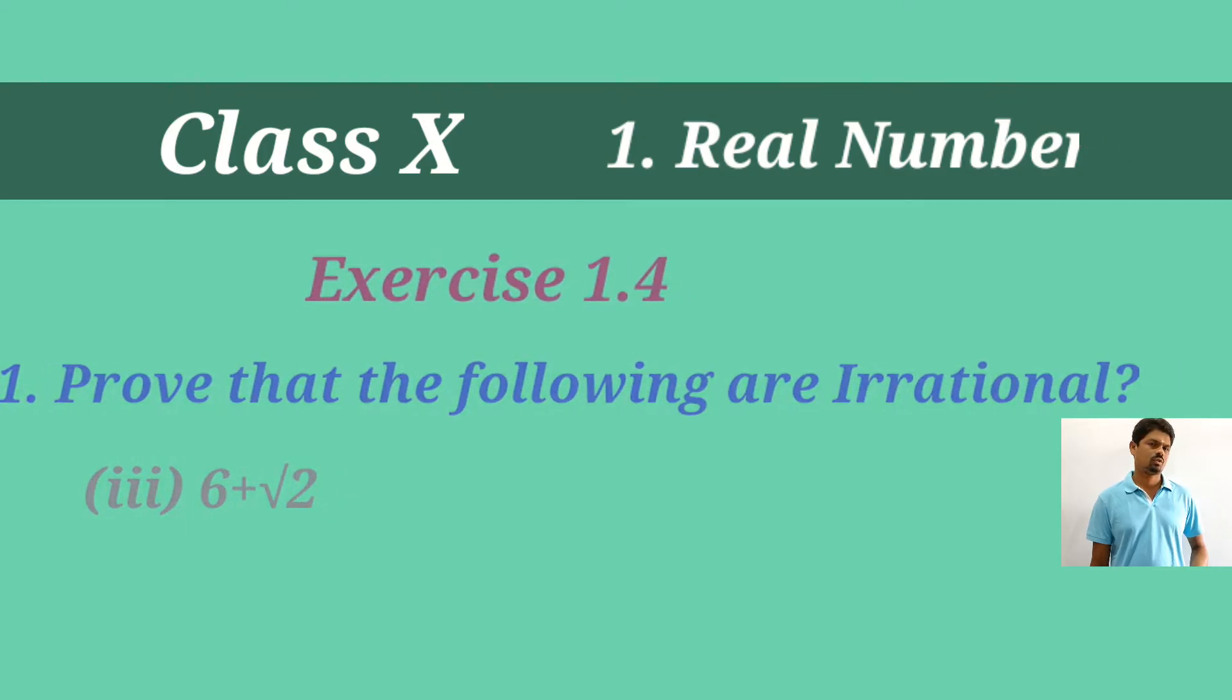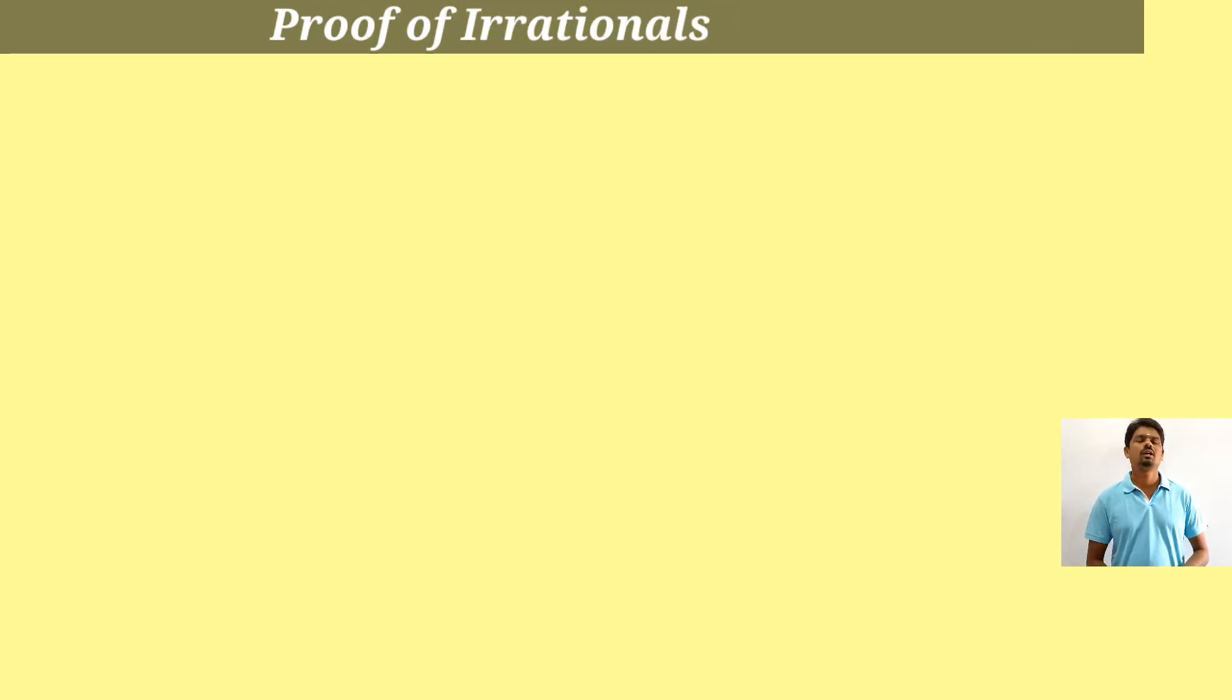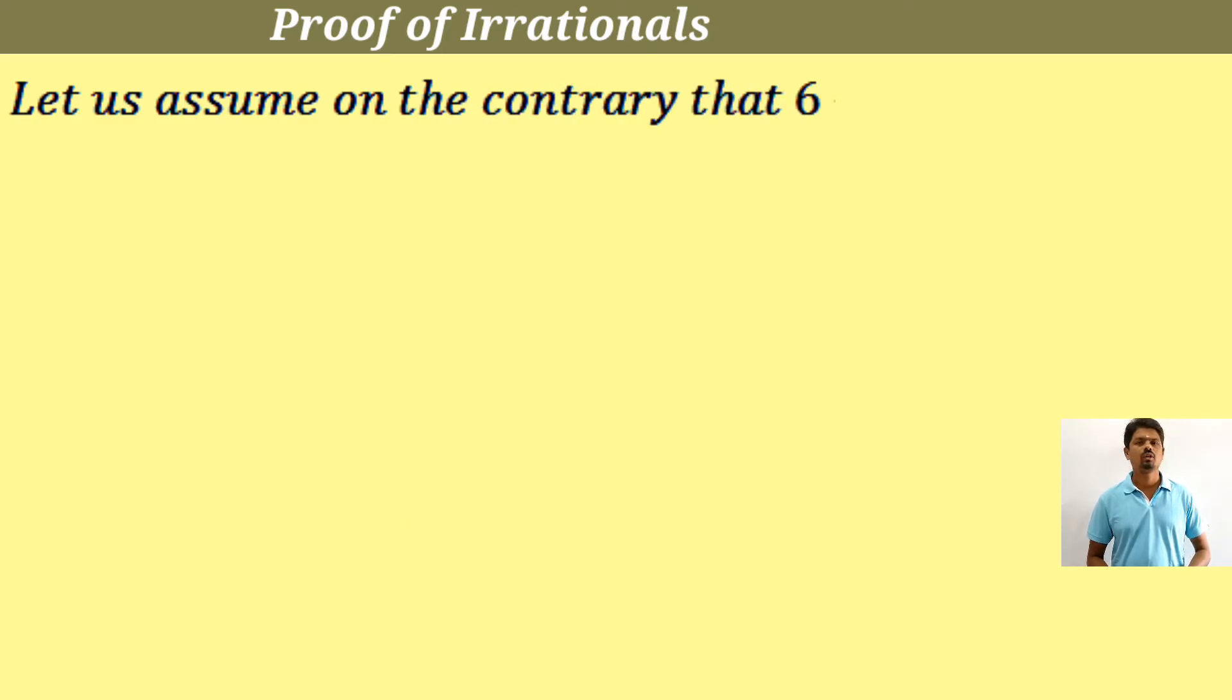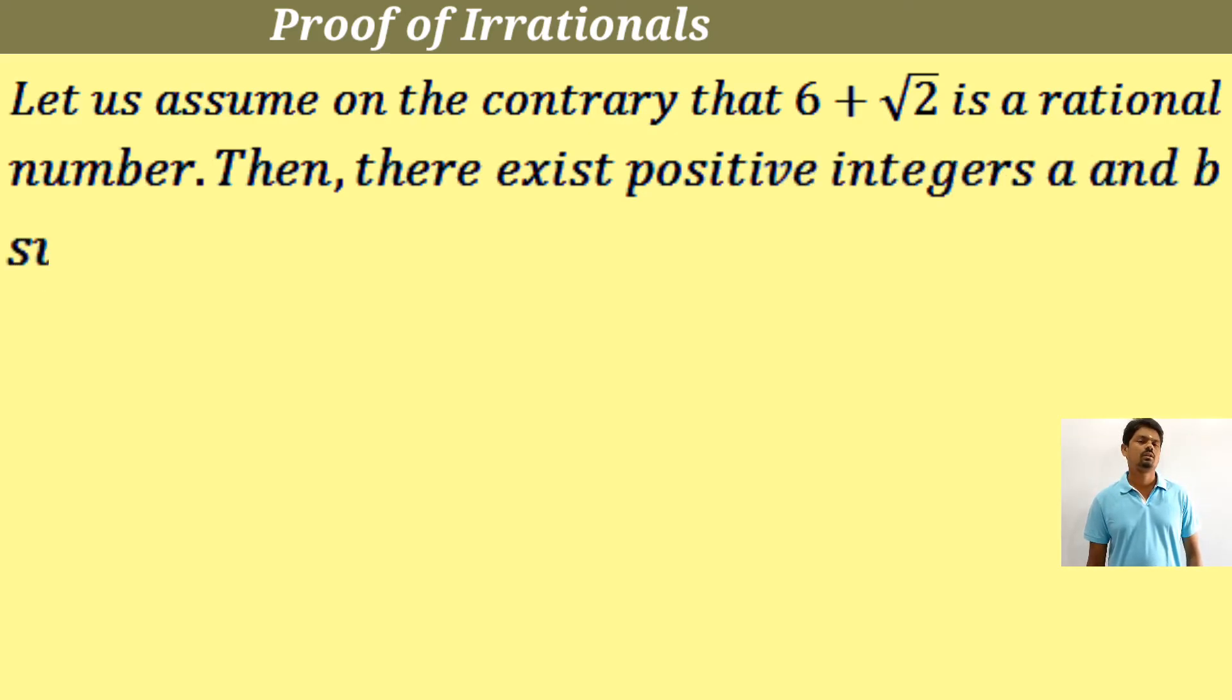See student, how can we prove 6 plus root 2 is an irrational number? Proof of irrational. First, let us assume on the contrary that 6 plus root 2 is a rational number. Then there exist positive integers a and b such that.